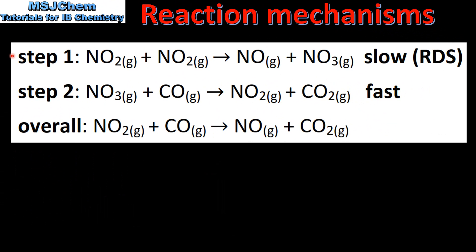Let's look at another example. Here we have a proposed reaction mechanism made up of two elementary steps, and at the bottom we have the overall equation for the reaction. If we look at the elementary steps we can see that some species appear on both sides of the arrow. The species that cancel out are the NO3's and one of the NO2's in step 1. Now we are left with one NO2 and one CO in the reactants and one NO and one CO2 in the products, which matches the overall equation.